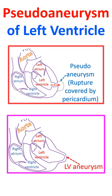A true aneurysm is usually a thinned and scarred region of the left ventricular myocardium which bulges out in systole — dyskinetic. If it is large, it will be visible as a bulge on the left heart border.